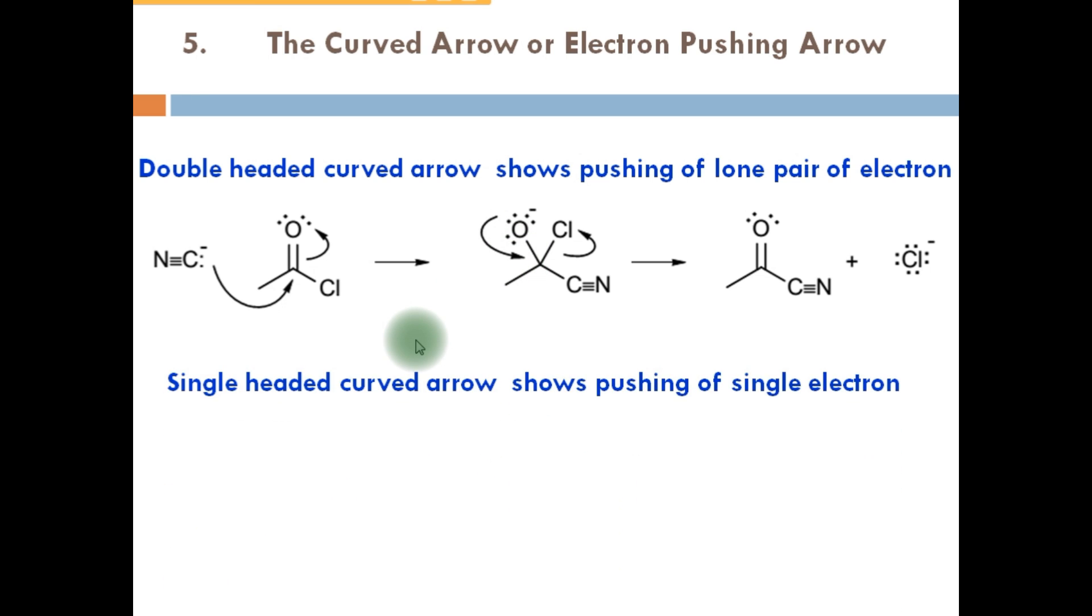When you see single headed curved arrow, it means pushing of single electron. This is possible in free radical reactions. This is single headed curved arrow.